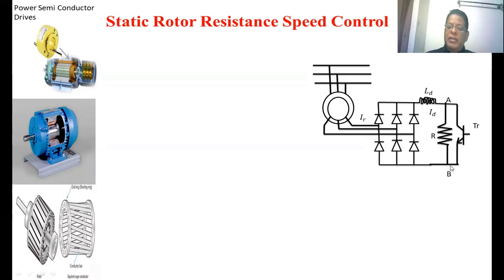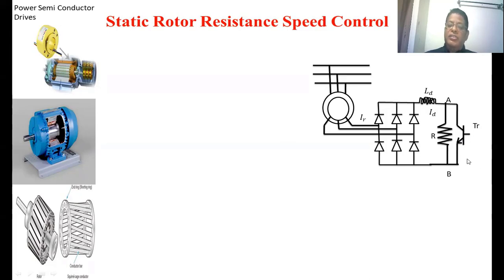The DC power is given to the external resistance between terminals A and B. The resistance between these two terminals is controlled by means of a BJT. Suppose if the BJT is ON, it simply makes a short across the resistance, so the resistance of AB becomes 0. Suppose if the BJT is OFF, then the resistance between A and B is R. By controlling the duty cycle of the BJT, we can control the resistance between 0 and R, smoothly controlling the resistance added into the rotor. This inductor is placed to provide a ripple-free DC link current.